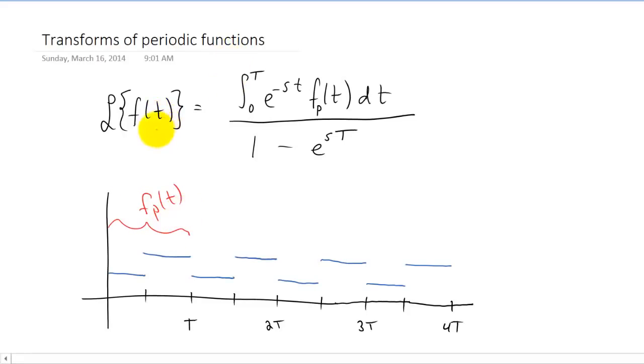So if you're using this formula and you have a periodic function, what you do is you almost do kind of like a miniature Laplace transform, but on just this little piece, this f sub p of t right here, and you just integrate from zero to T instead of from zero to infinity. You divide that by one minus e to the negative sT, and that's your Laplace transform.